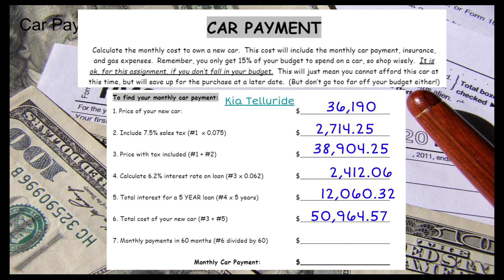So my monthly payments: there are 60 months in five years, so we're going to divide $50,964.57 by 60. My car payment is going to be $849.41 — just for the car payment. It's a little expensive, guys. Just a tad.